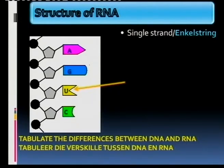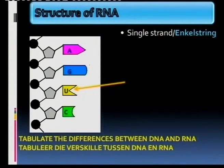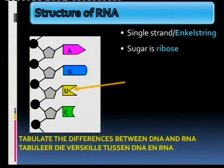RNA is only a single strand — a single string. And what you have to be careful about is that it's not a single helix, it's not a helix at all, it's just a single string. The sugar there is called ribose.